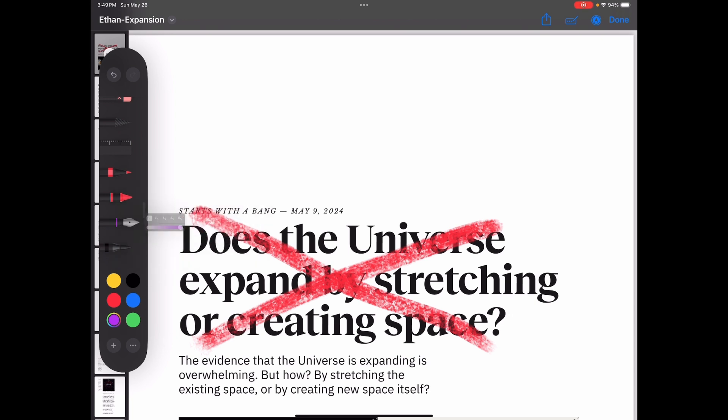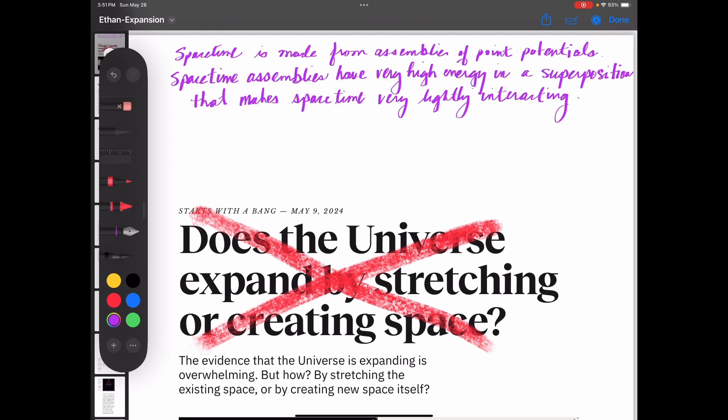So let's just put some facts up here so we're all on the same page about what's really happening. Spacetime is made from assemblies of point potentials. Spacetime assemblies have very high energy in a superposition of point potentials that makes spacetime very lightly interacting. So you need to think about spacetime as this soup or ether or sea of point potential assemblies that have such high energy in such rapid orbitals at very small radii that it permeates everything in the universe, including our molecules, our atoms, the assemblies of the standard model.